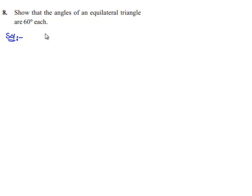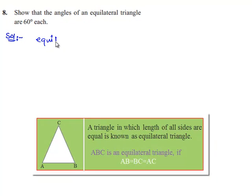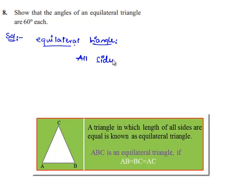We are asked to prove that angles in an equilateral triangle are 60 degrees each. Before finding that, let us know what an equilateral triangle is. A triangle is said to be equilateral if all the sides of the triangle are equal.